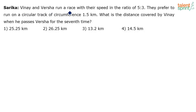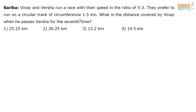Vinay and Varsha run a race with their speeds in the ratio 5:3. They prefer to run on a circular track of circumference 1.5 kilometers. What is the distance covered by Vinay when he passes Varsha for the seventh time? It's a simple question — let's see the solution in a few seconds.